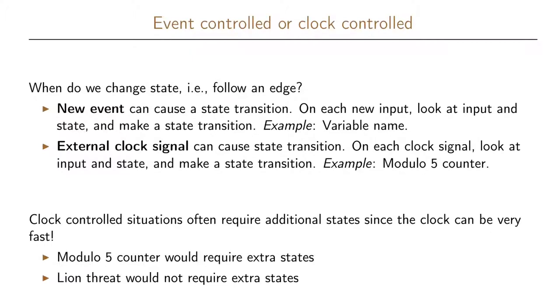Clock control situations can sometimes cause troubles because it means we may have to introduce additional states since the clock can be very fast. In the example with the modulo 5 counter, we would require extra states, but in the case with the lion thread, we would not require extra states.